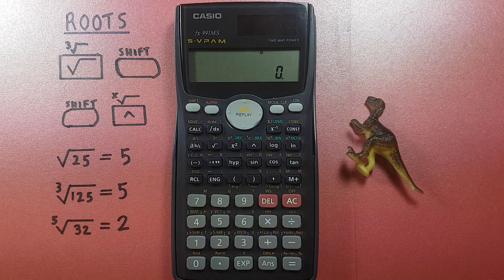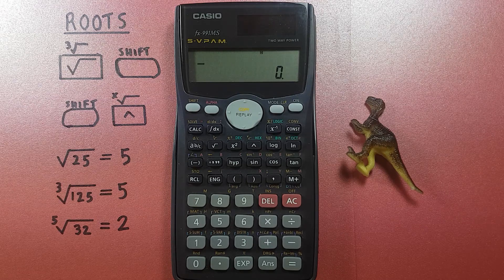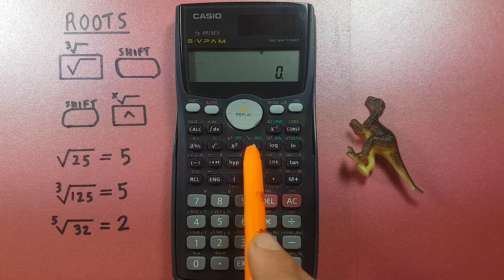But what if we want to find the root of something that isn't a square root or a cube root? Well to do that we use the second function of the up arrow or caret key.